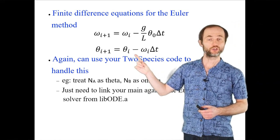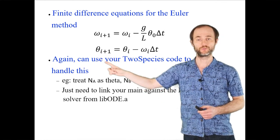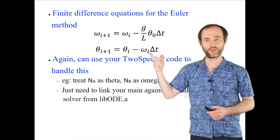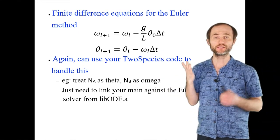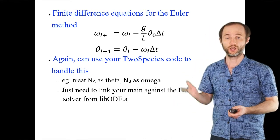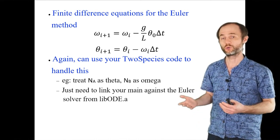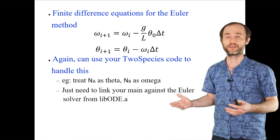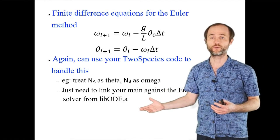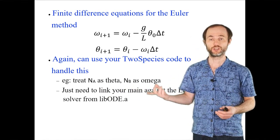Note there is a typo on the slide: the sign in the discretized theta equation should be plus, not minus — it should be theta_{i+1} = theta_i + omega_i * delta_t. This gives a system of two ODEs with two independent variables, so we can use the two-species solver. We don't need to change anything in our solver — just treat concentration of species A as theta and concentration of species B as omega.